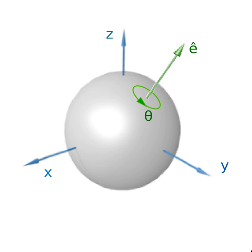Points on the R² plane can also be presented as complex numbers, where the point in the plane is represented by the complex number z = x + iy.